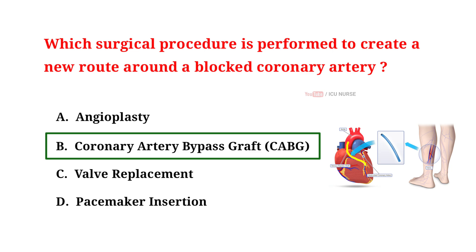A new route is created around a blocked coronary artery in a coronary artery bypass graft to restore proper blood flow to the heart muscle. The blockage obstructs blood flow, depriving the heart of necessary oxygen and nutrients. By bypassing the blocked artery with a healthy blood vessel, usually taken from the leg, arm, or chest, the heart receives adequate blood supply. This procedure helps reduce symptoms like chest pain and lowers the risk of heart attacks.